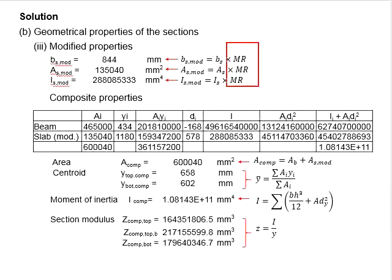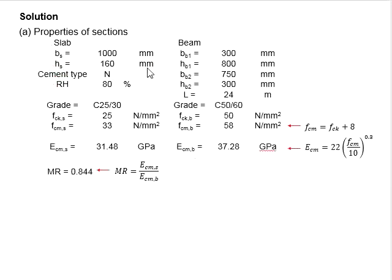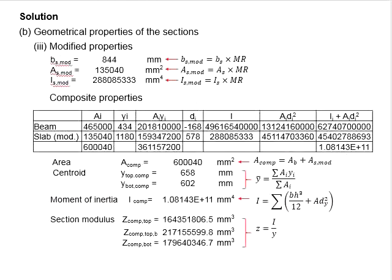This comes to the application of the modification factors which we calculated earlier. It is derived from the ratio between the modulus of elasticity of the slab and the beam, which equals 0.844. With that, the width of the slab, the area of the slab, and the moment of inertia of the slab will be multiplied with 0.844, the modification ratio, giving you these properties.